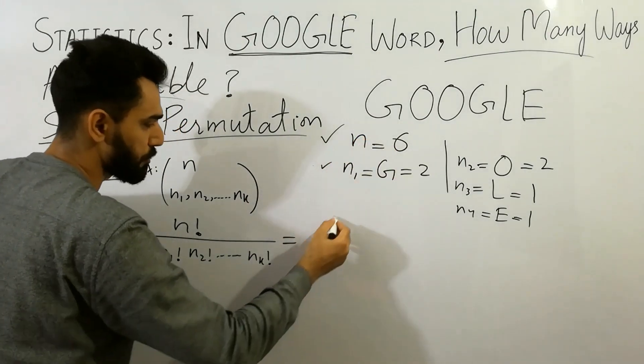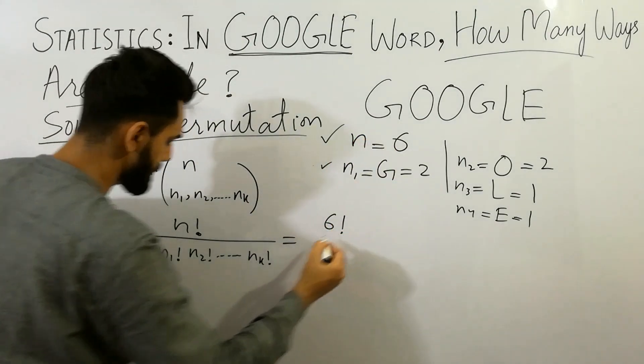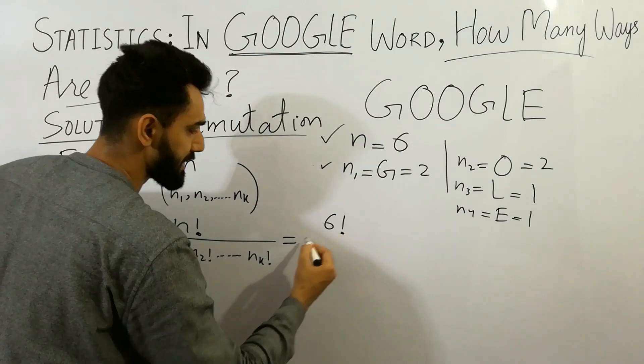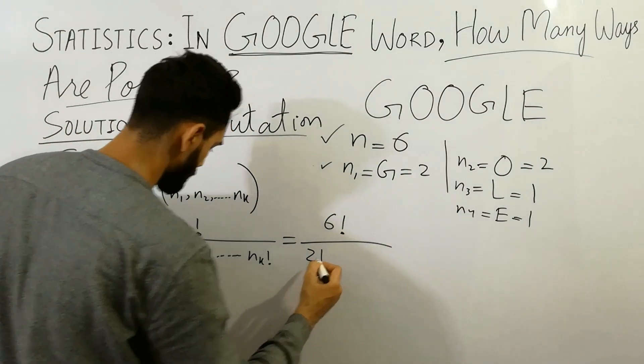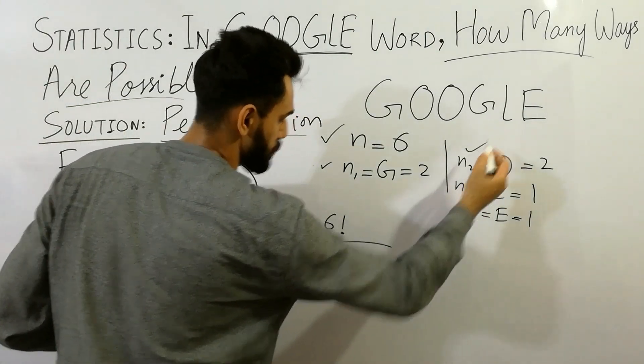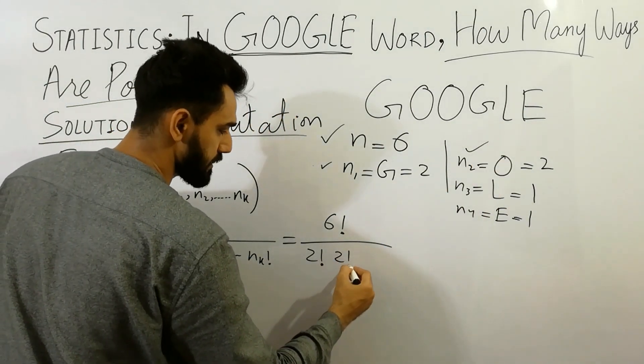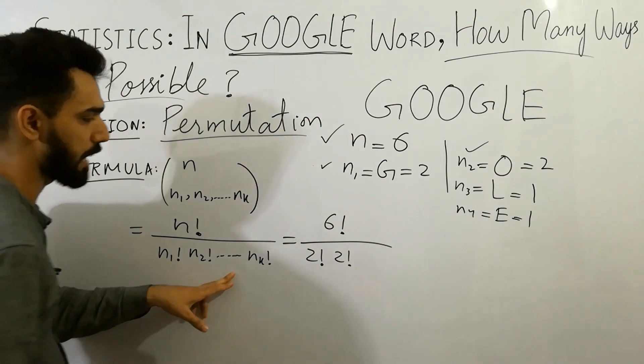N is here 6, so put here 6. N is here 6 factorial divided by N1. N1 is here 2, 2 factorial. N2 is here also 2, 2 factorial, and next simply here, and so on.